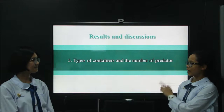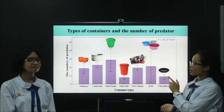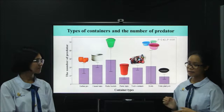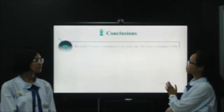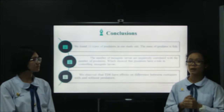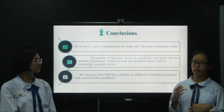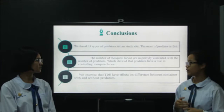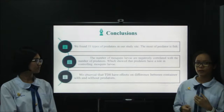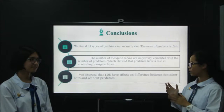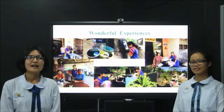Lastly, we studied the types of containers and the number of predators. We found the most number of predators in plastic buckets. The number of mosquito larvae is negatively correlated with the number of predators, and TDS plays a role in controlling mosquito larvae. We also observed that TDS has an effect on the difference between containers with predators and without predators.